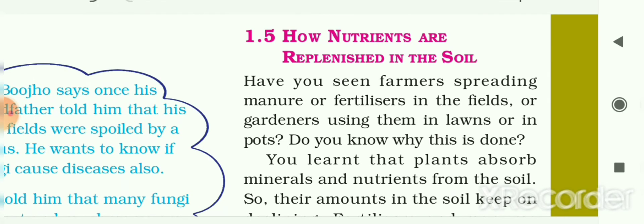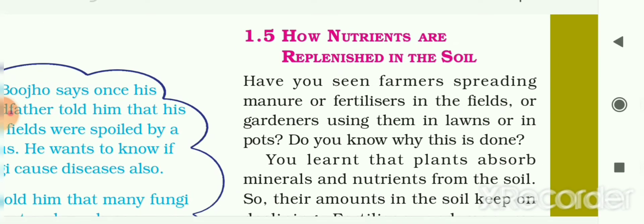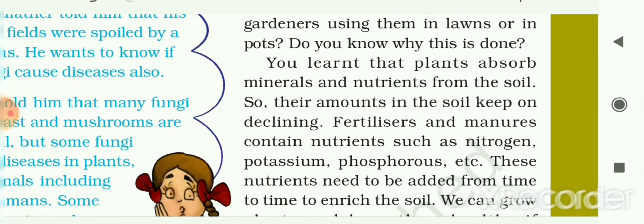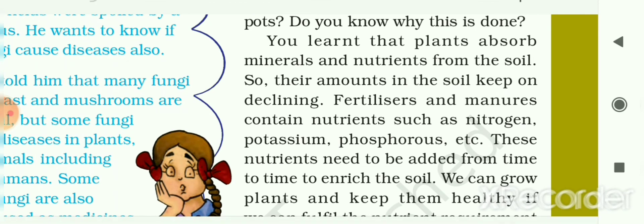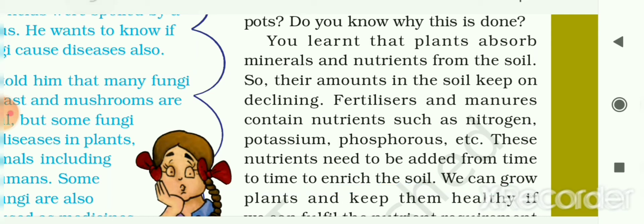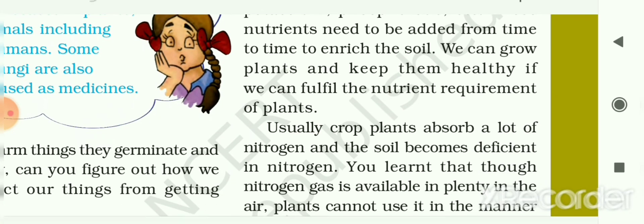Next, let's look at how nutrients are replenished in the soil. Have you seen farmers spreading manures or fertilizers in the fields, or gardeners using them in lawns or pots? Plants absorb minerals and nutrients from the soil, so their amount in the soil keeps declining day by day. Fertilizers and manures containing nutrients such as nitrogen, potassium, and phosphorus need to be added from time to time to enrich the soil. We can grow plants and keep them healthy if we can fulfill their nutrient requirements.